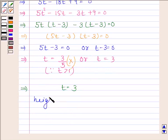Therefore t equals 3. Now we will find height of tower. Height of tower is equal to half gt squared.